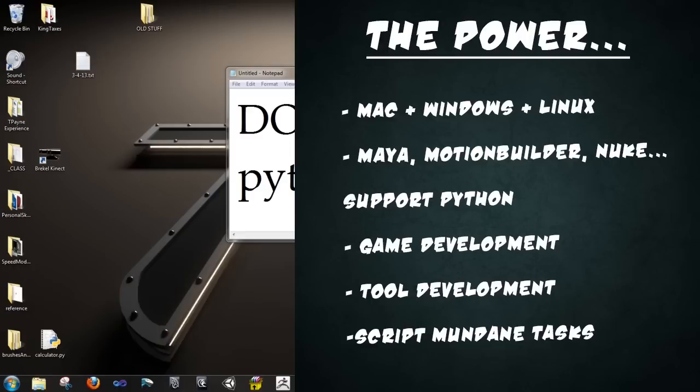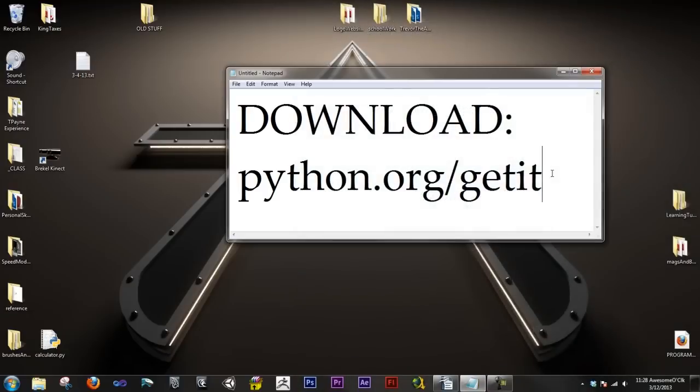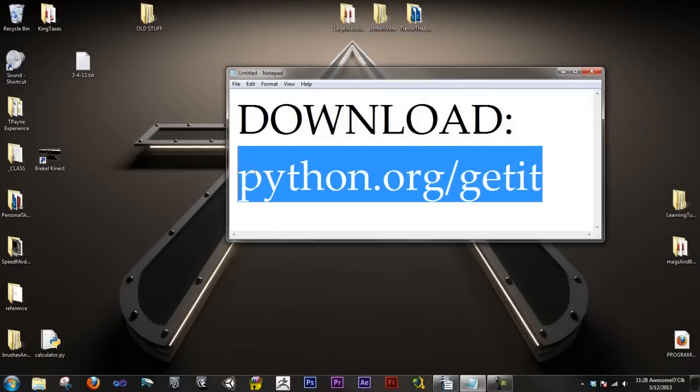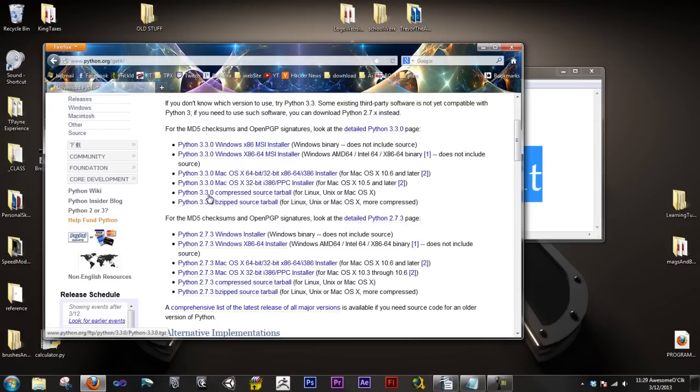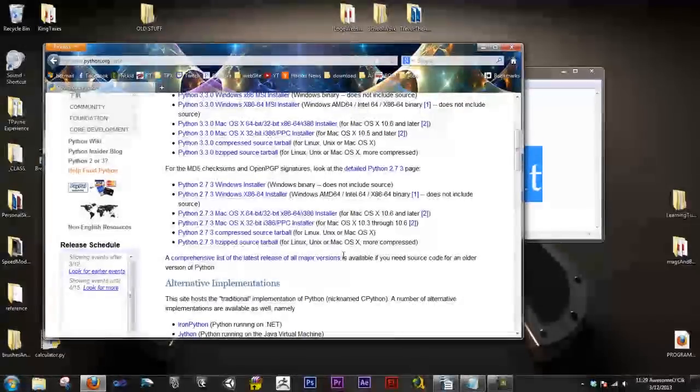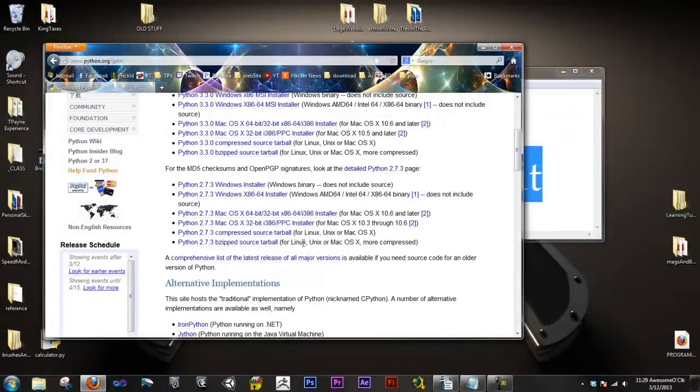Okay, so where do you download it? You download it here on python.org/get-it. So the version that we're going to be working with is 2.7.3 and you can find that below 3.3 right here. And it's free to download and it plugs right into just about any platform you need.